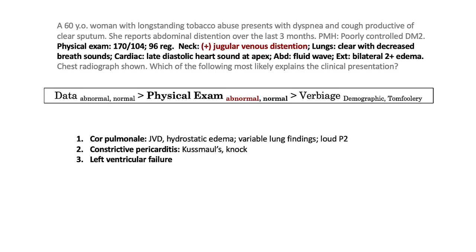Insofar as constrictive pericarditis, you might expect the presence of Kussmaul's sign and/or a pericardial knock, in addition to hydrostatic edema. Neither of these are described in the question stem. And finally, LV failure will typically be described with an S3 and rales. An S4 might be included if the patient suffers from diastolic heart failure.